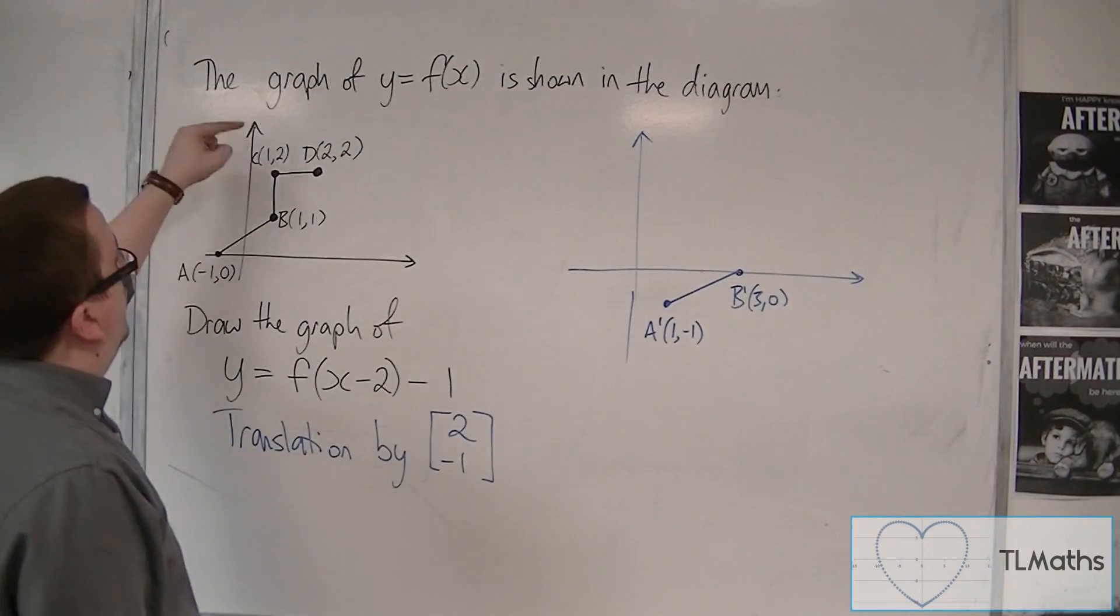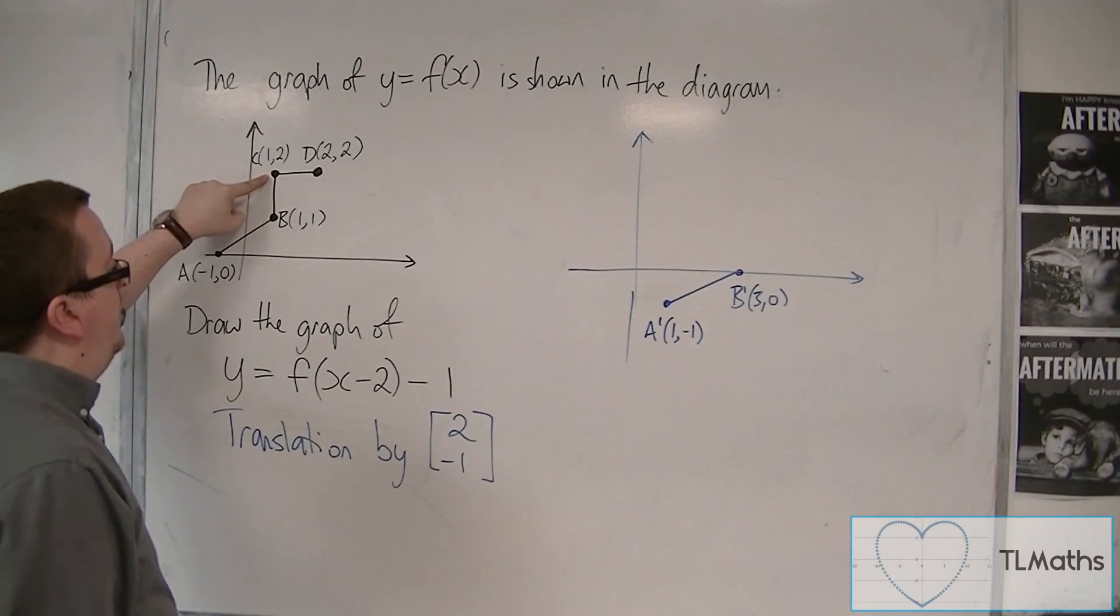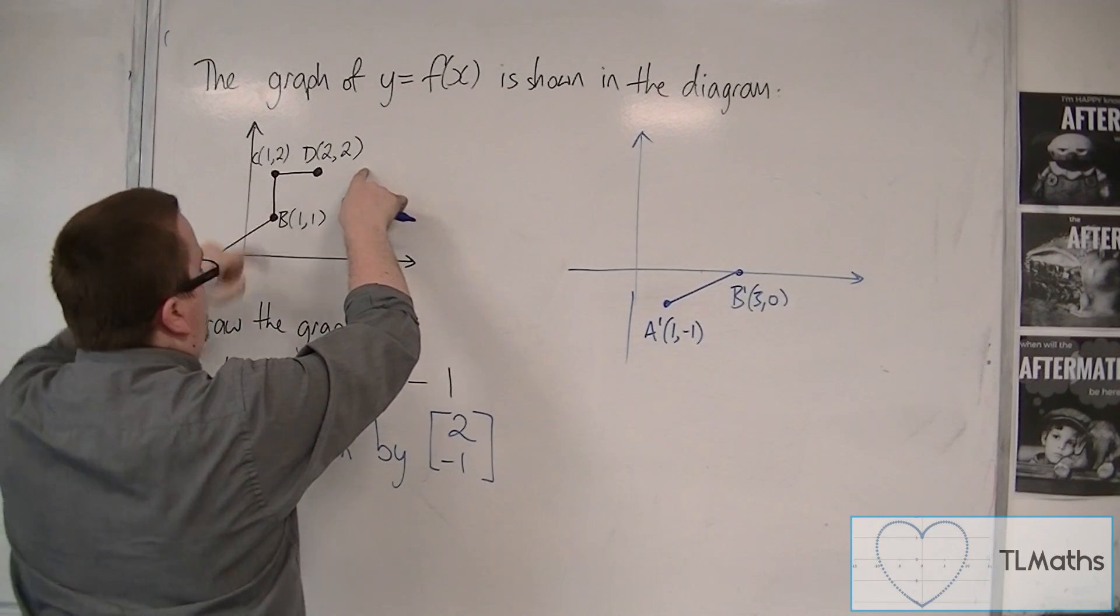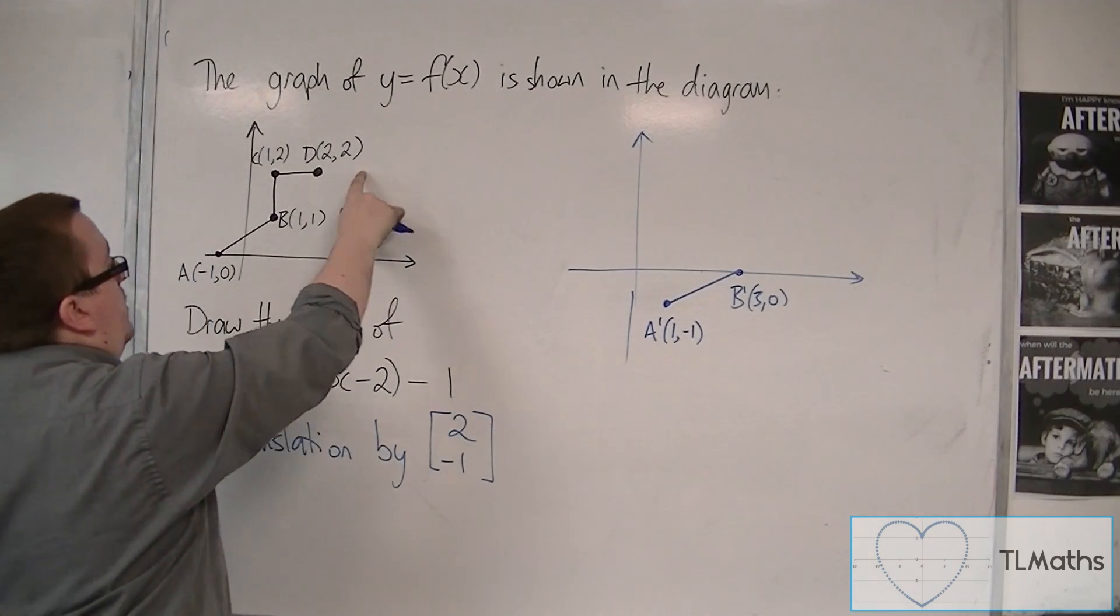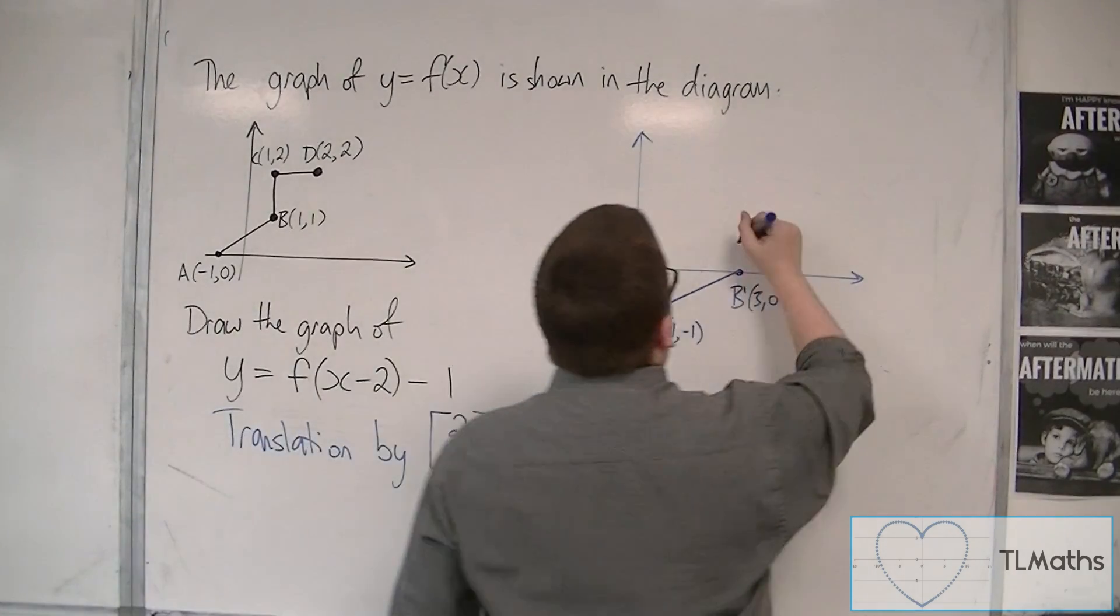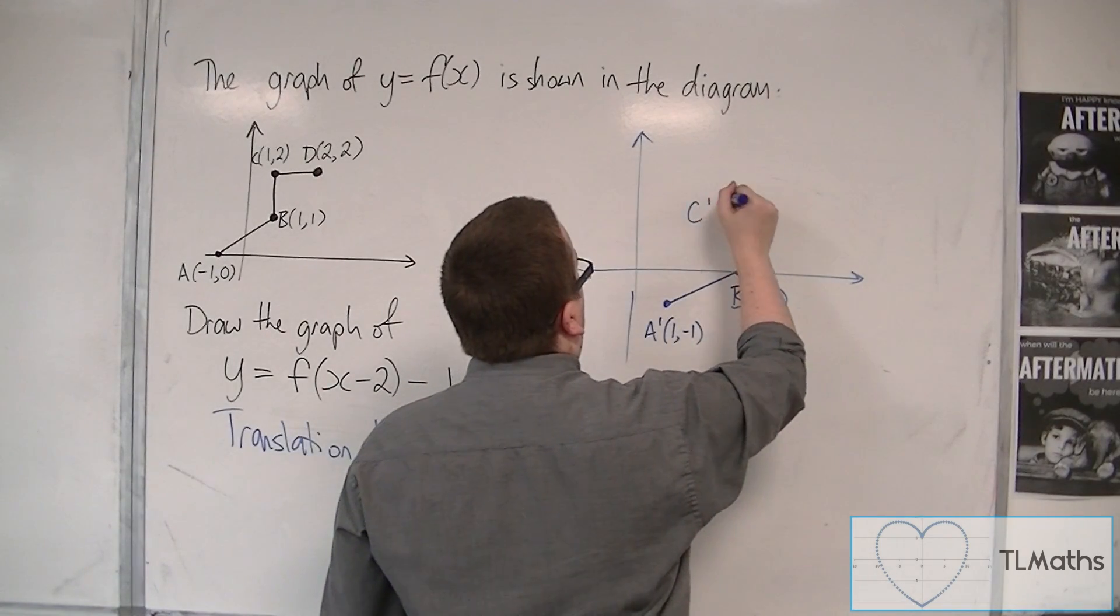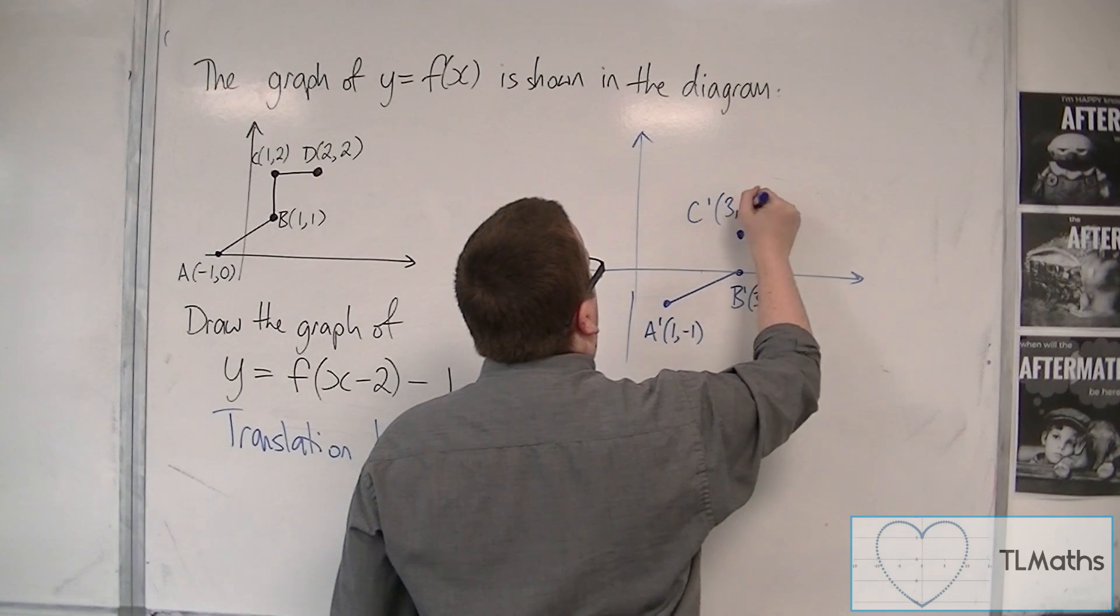Then we've got the point C, so at 1, 2. So it travels 2 to the right, so we have 3, 2, and then 1 down, so at 3, 1. So that point can be C prime, which is at 3, 1.